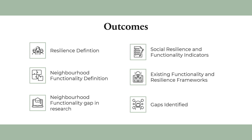The key outcomes of the literature review identified gaps in researching resilience and functionality at a neighbourhood scale, while defining both resilience and functionality and their interdependencies. Additionally, the literature review found the importance of using indicators as a tool to measure resilience, however with little effort to quantify this as functionality.